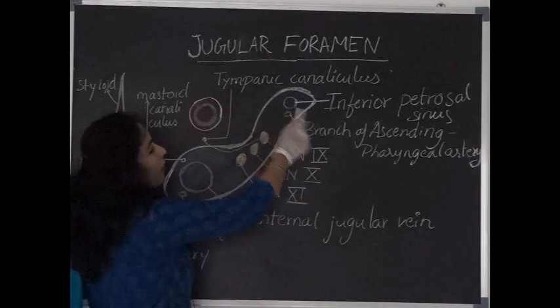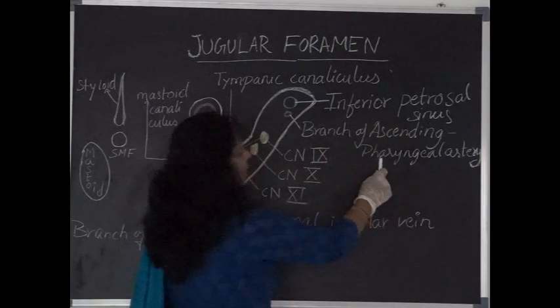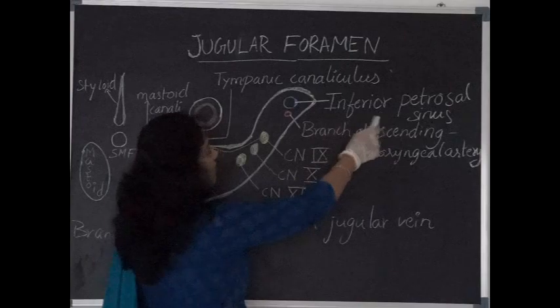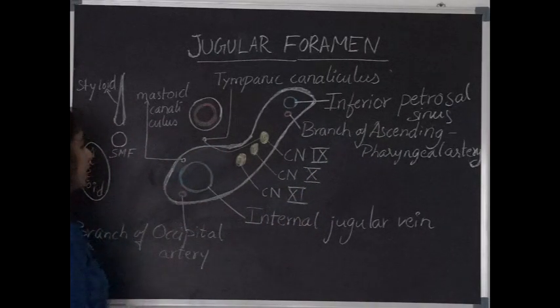From the anterior part, inferior petrosal sinus and meningeal branch of ascending pharyngeal artery will pass through. Inferior petrosal sinus is the first tributary of internal jugular vein when it comes out through the cranium.